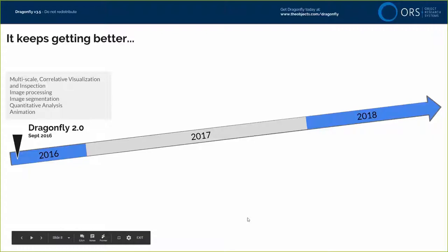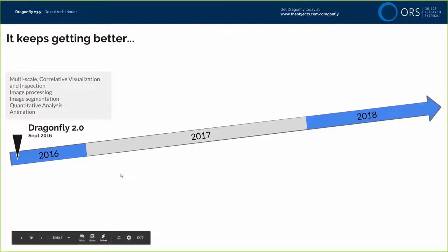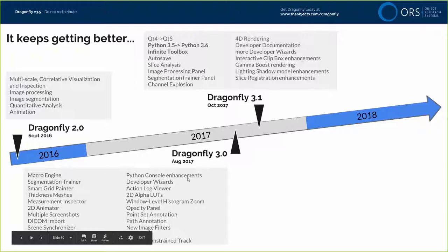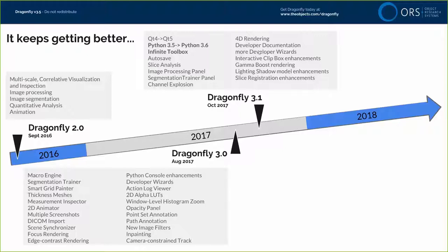We introduced Dragonfly in 2016 as a platform for correlative visualization and image processing. The next year we launched Dragonfly 3.0 with new features such as our macro engine and segmentation trainer — our first machine learning image segmentation — as well as other new features. Shortly after, we introduced 3.1 with our Infinite Toolbox, updating our Python tools from 3.5 to 3.6, and introduced 4D rendering for four-dimensional data sets.